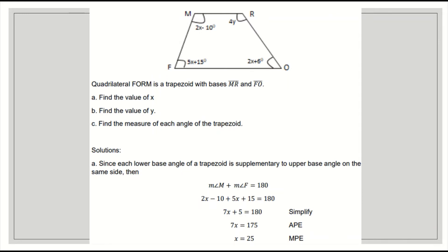Next, trapezoid. Quadrilateral FORM is a trapezoid with bases MR and FO. This is base 1, base 2. Find the value of x and y, and find the measure of each angle of the trapezoid. Since each lower base angle of a trapezoid is supplementary to the upper base angle on the same side, then angle M plus angle F is 180. So these two equal 180.